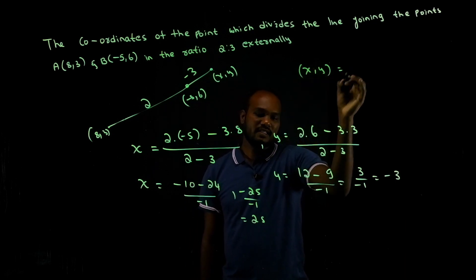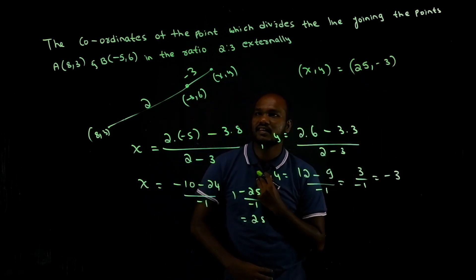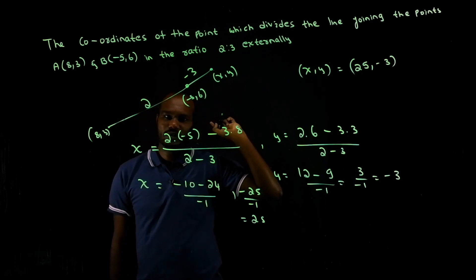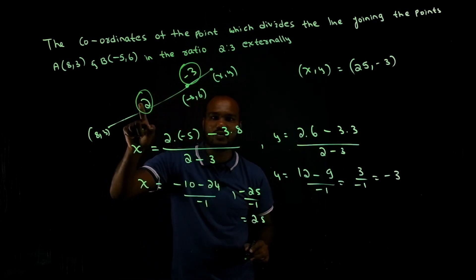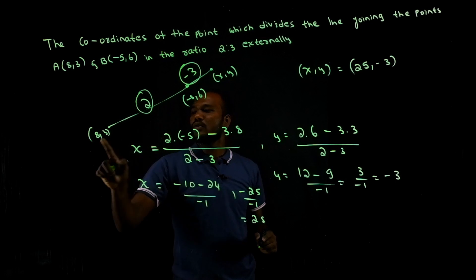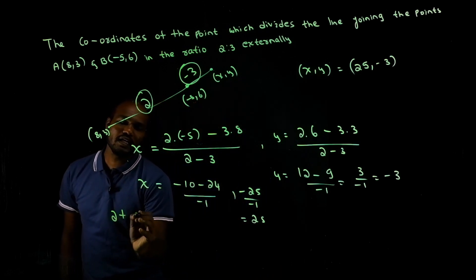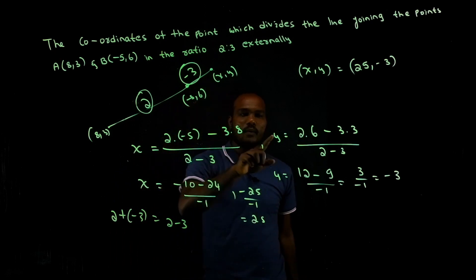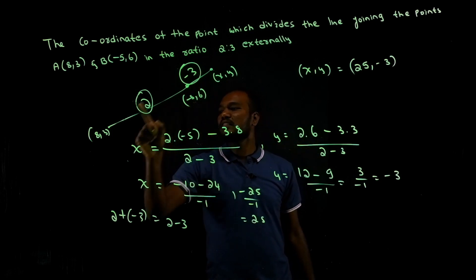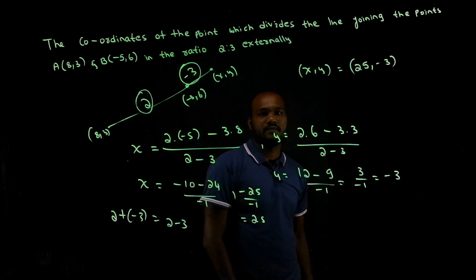So the final answer for the point x comma y is 25 comma minus 3. For external division, remember: take the second ratio as negative, start with m into the second point's coordinate minus n into the first point's coordinate, divided by m minus n.